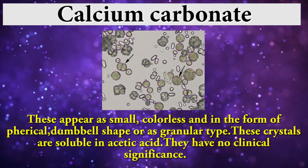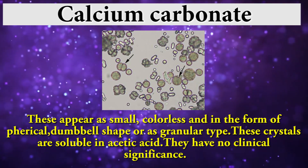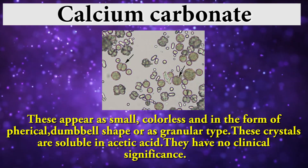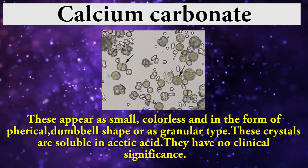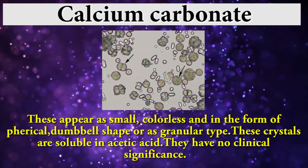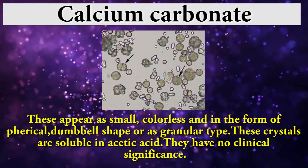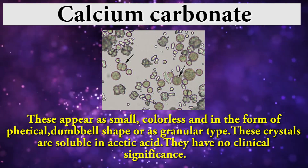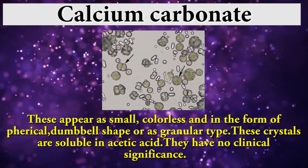Calcium carbonate crystals appear as small, colorless crystals in the form of spherical, dumbbell shapes, or as granular types. These crystals are soluble in acetic acid and have no clinical significance.